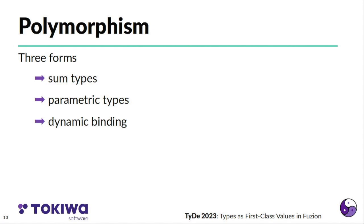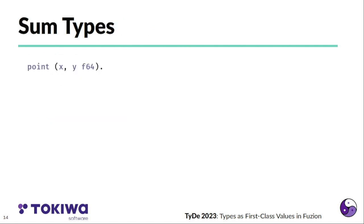Fuzion supports different kinds of polymorphism. It has sum types, it has parametric types, and it supports dynamic binding. I will quickly explain that.